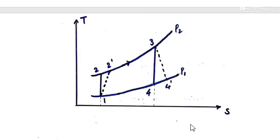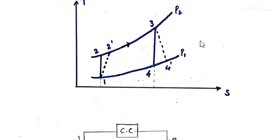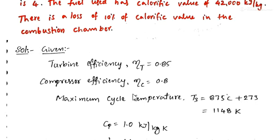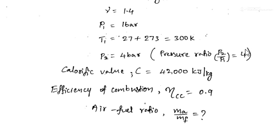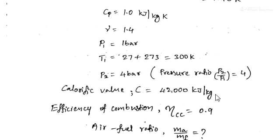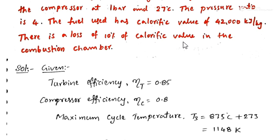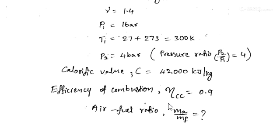The pressure ratio is P2/P1. In a simple gas turbine, the working fluid operates between two pressures P1 and P2. So P2/P1 = 4, and since P1 = 1 bar, P2 = 4 bar. The calorific value of the fuel is given as 42,000 kJ/kg, which we denote as capital C = 42,000 kJ/kg.